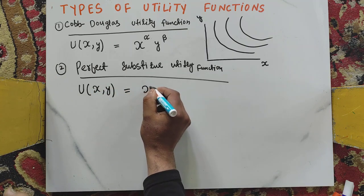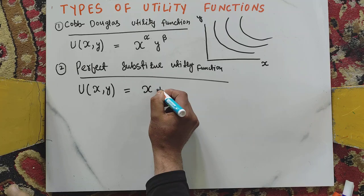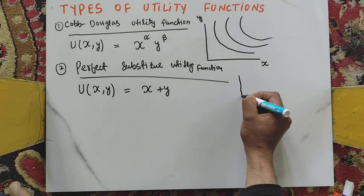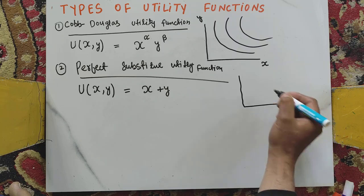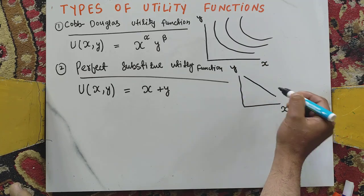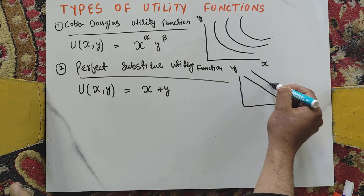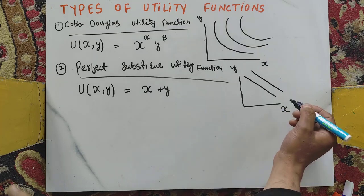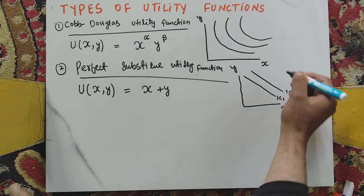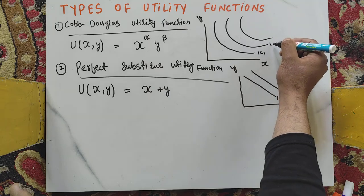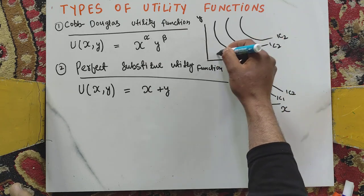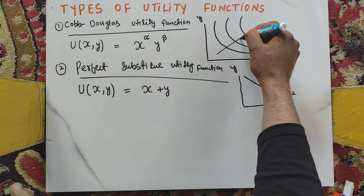The functional form of the perfect substitute utility function is utility as a function of X plus Y. On the graph, with X on the horizontal axis and Y on the vertical axis, the indifference curves are straight lines. These are labeled IC1, IC2, IC3, and so on — the higher the indifference curve, the higher the utility.